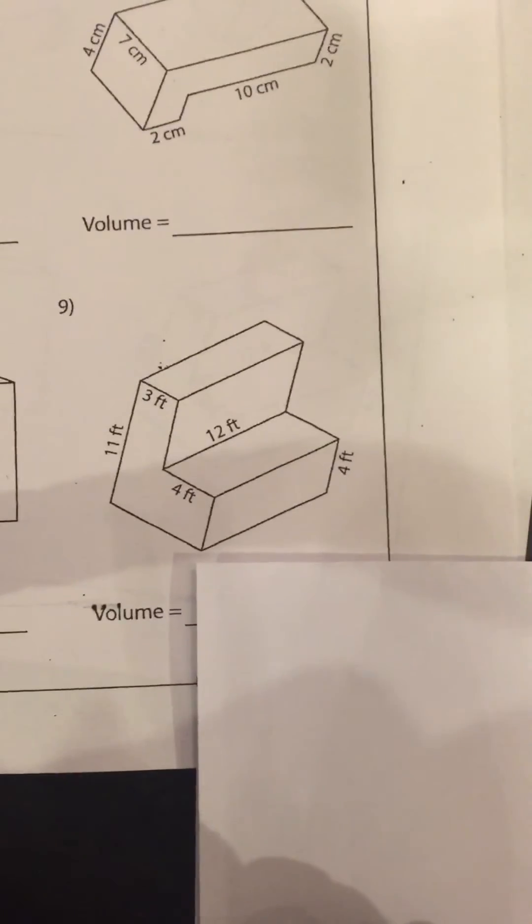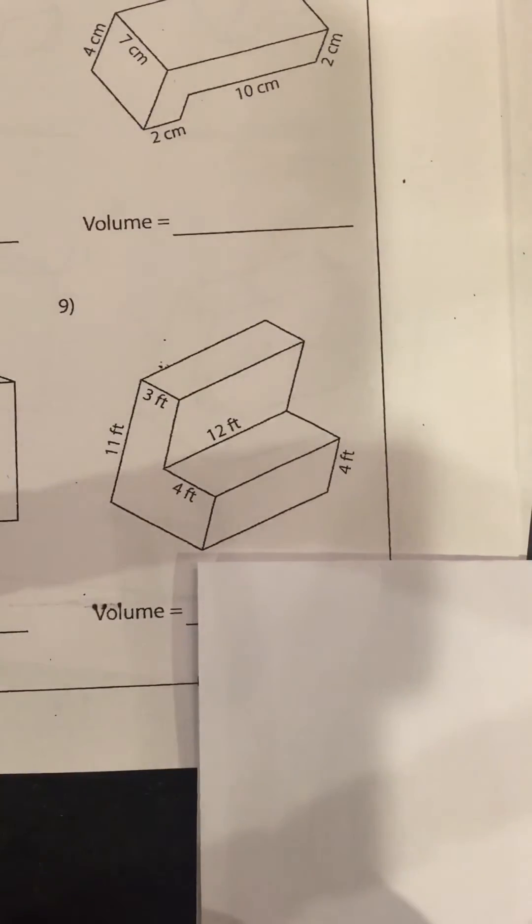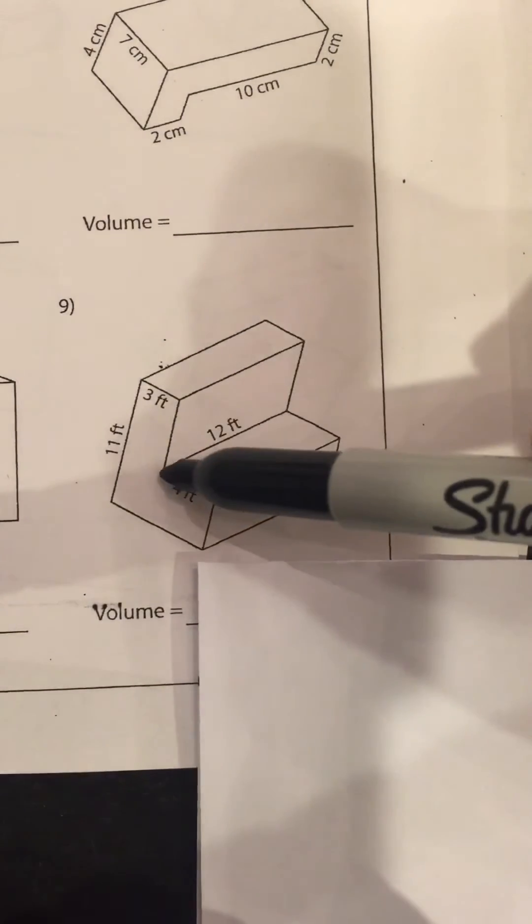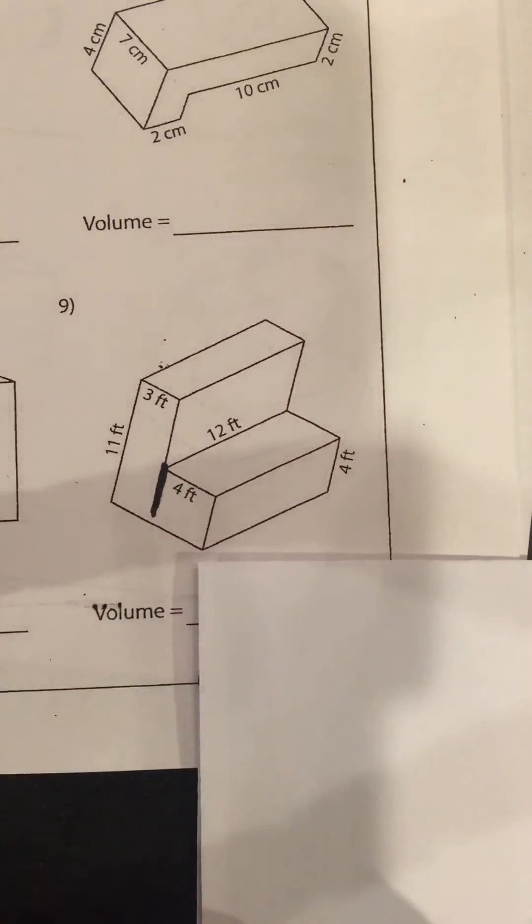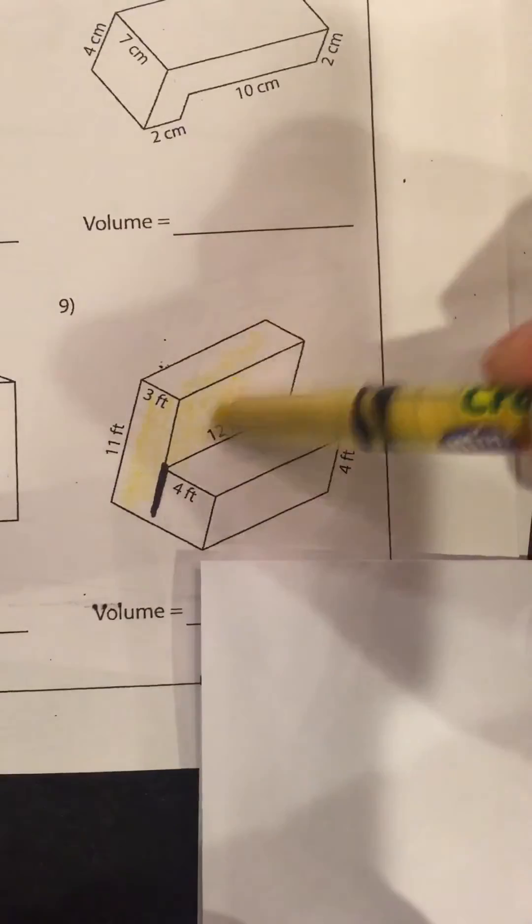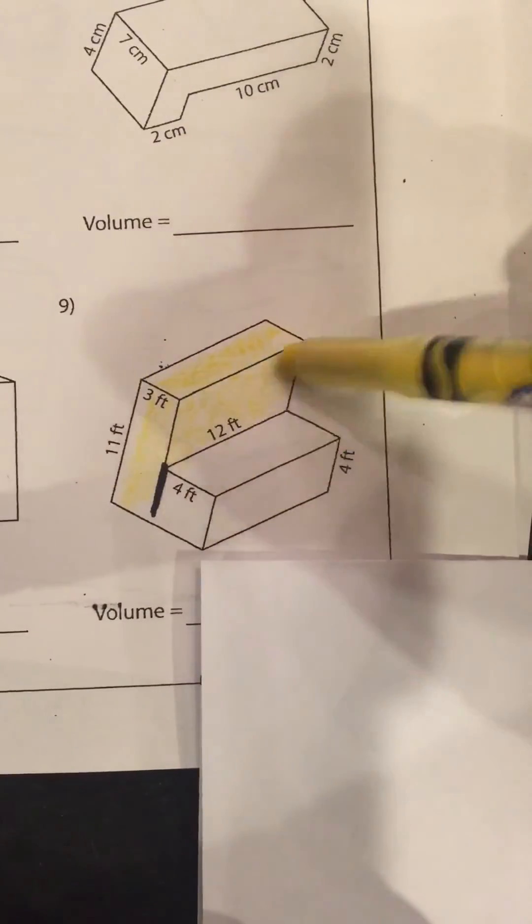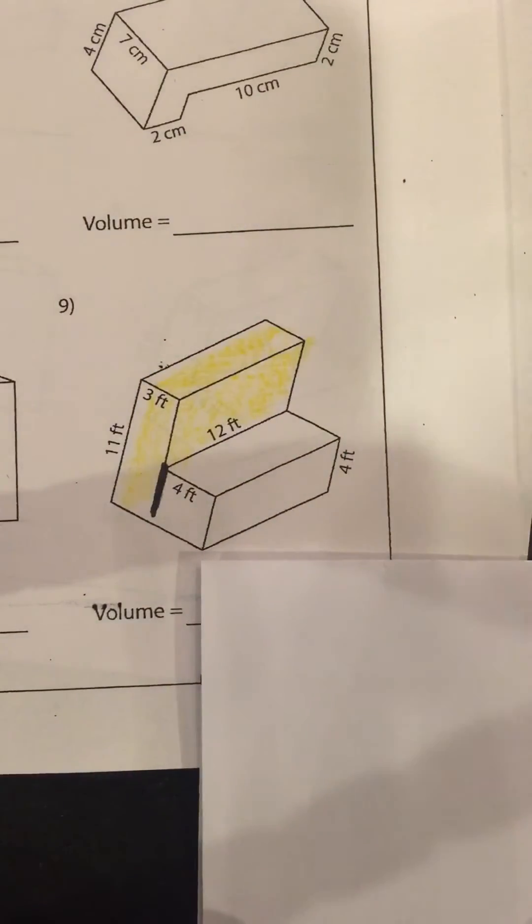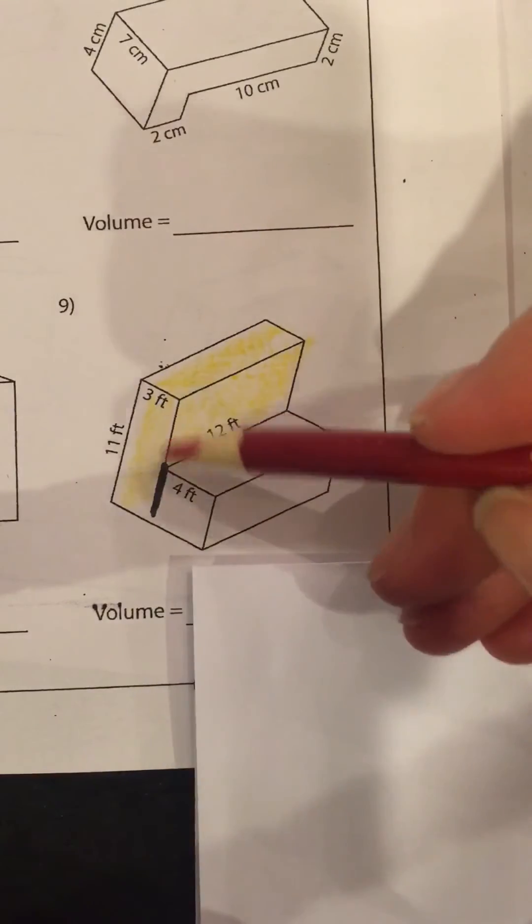All right, our last shape. Where am I going to divide? I'm going to divide right here. Okay, color my first piece in yellow and my second piece red.